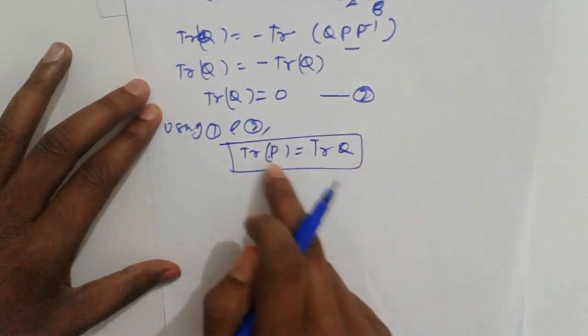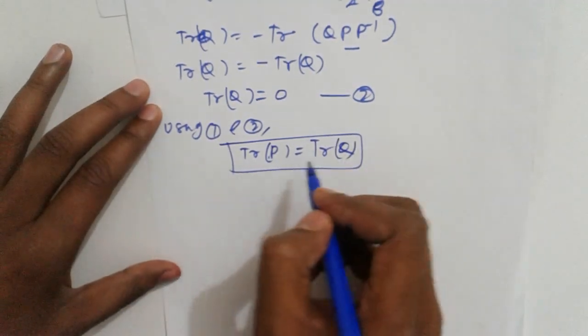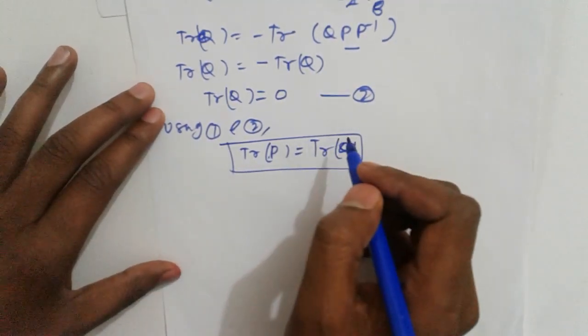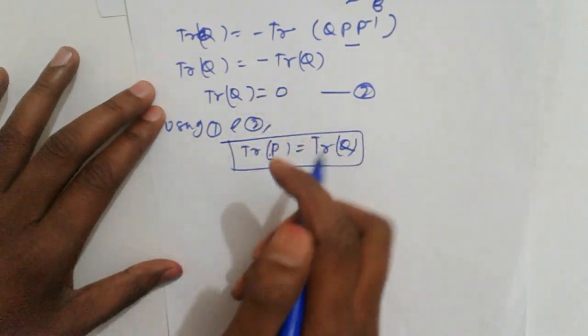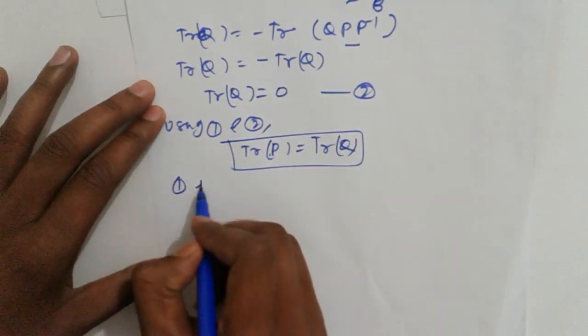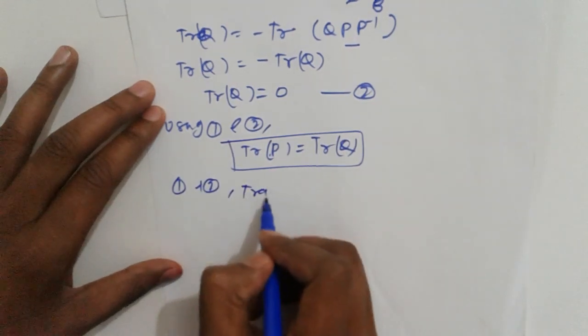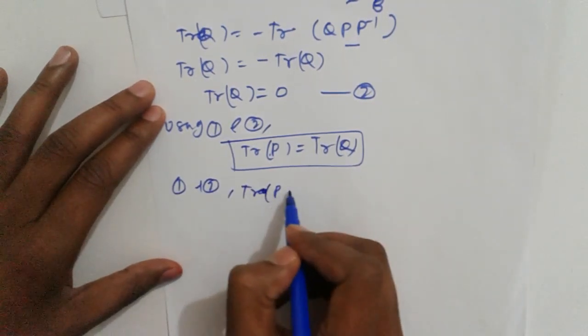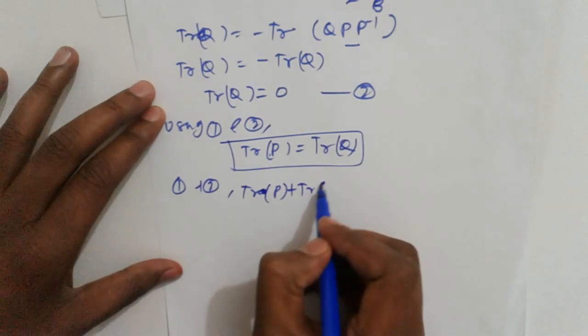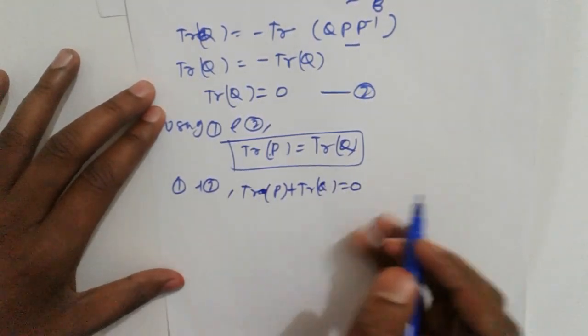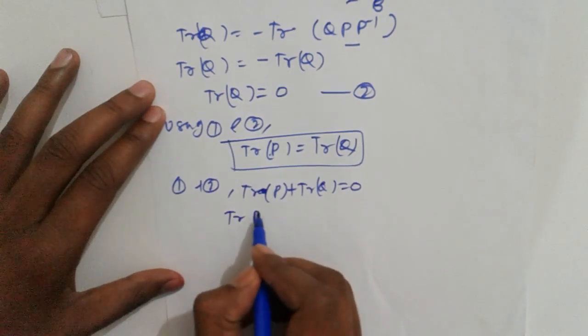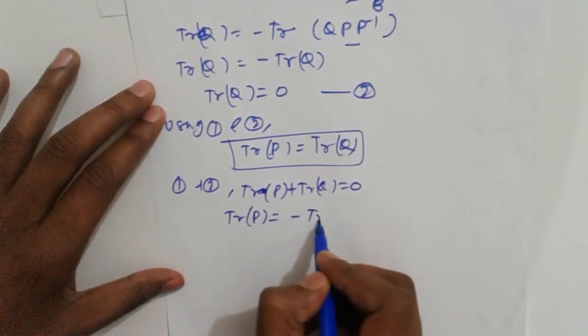Next, suppose we add them: trace of P plus trace of Q equals zero. Transferring to the right hand side: trace of P equals minus trace of Q.